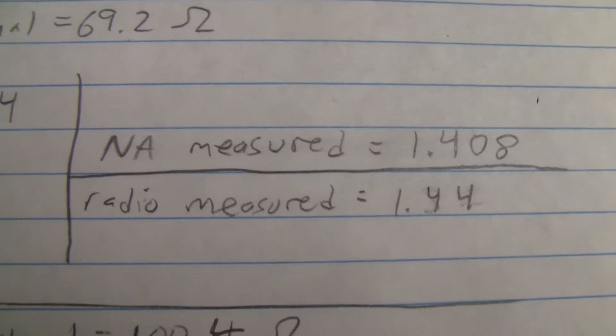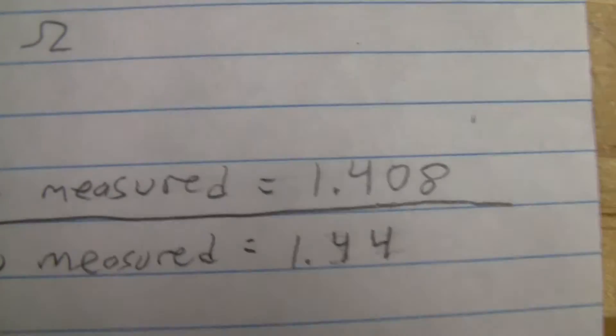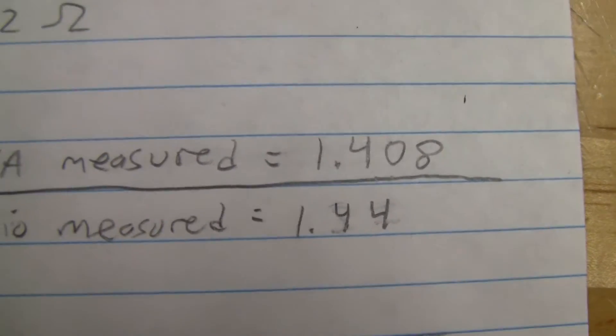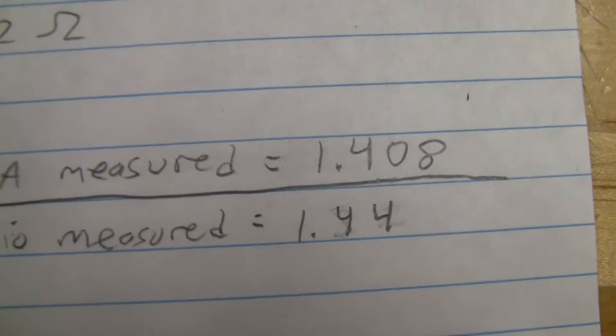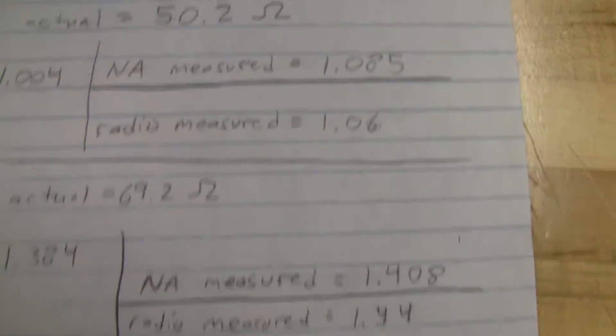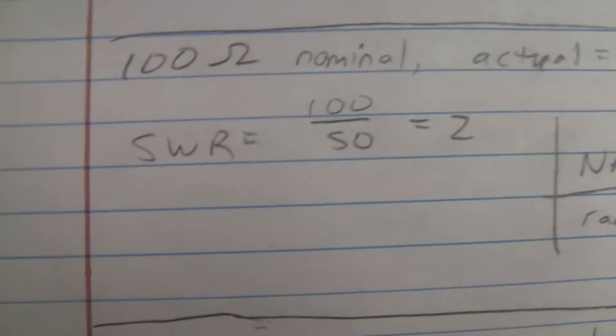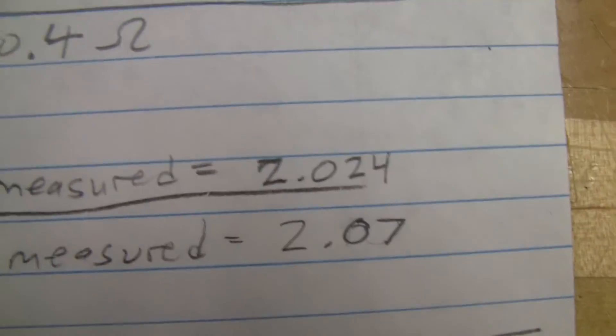We measured with the network analyzer, 1.408. Radio measured 1.44. Still very close. I mean, that's up to two decimal places on the radio, but generally you're talking one decimal place for SWR, so 1.4, and those are dead on. You guys can go calculate these percent errors and see if it matters. And then for the 100 ohm, we expect two. Like I showed, we have two and change, and these are generally the same.